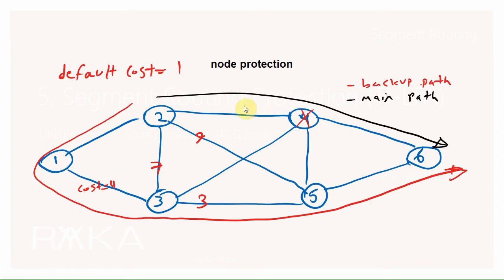Node protection means that if the neighbor router in the best path — in other words, the next-hop router in the best path — fails, then the backup route replaces it in less than 50 milliseconds. The backup route is pre-calculated in the routing table before any failure, just like link protection.